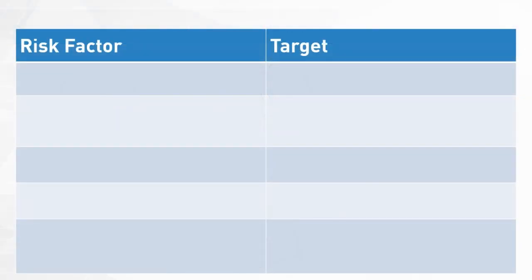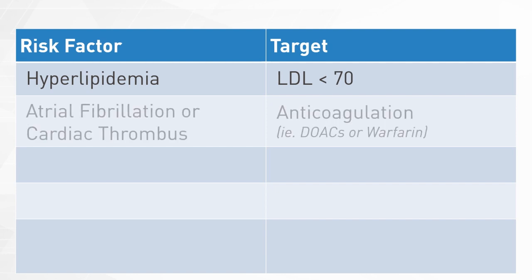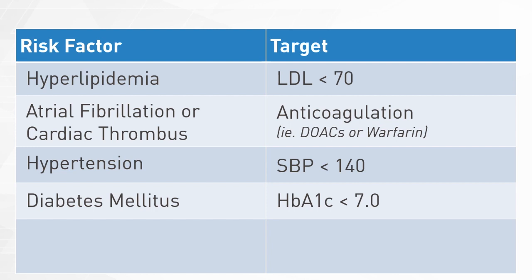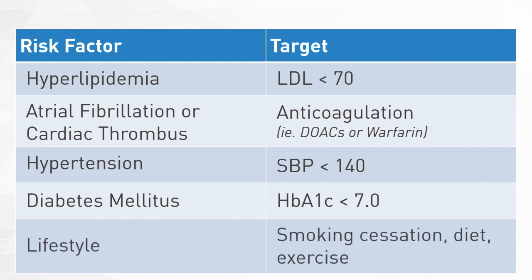Patients with an LDL of greater than 70 should remain on a high-dose statin indefinitely. If you determine that the patient has a cardiac thrombus or atrial fibrillation, they should be treated with long-term anticoagulation. Finally, risk factor reduction for stroke is recommended, including treatment of hypertension for a goal systolic blood pressure of less than 140, treatment of diabetes for a goal A1c of less than 7, and lifestyle modification including smoking cessation, diet, and exercise.